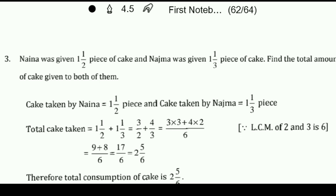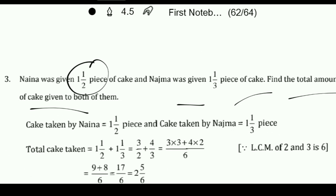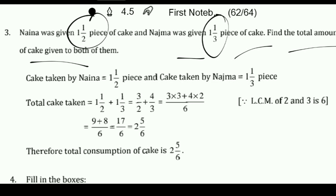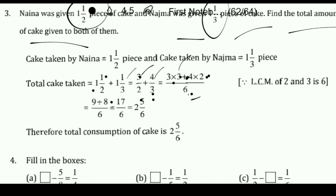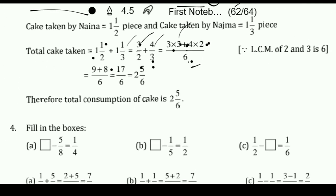Nana was given 1 and 1 by 2 piece of cake and Nizma was given 1 and 1 by 3 piece of cake. Find the total. This is a mixed fraction question, so we first convert to improper fractions: 1 and 1 by 2 becomes 3 by 2, and 1 and 1 by 3 becomes 4 by 3. Then take the LCM of 2 and 3, which is 6. In 2 times table, 6 comes 3 times; in 3 times table, 6 comes 2 times. So 3 × 3 = 9 and 4 × 2 = 8. Then 9 plus 8 is 17 upon 6, which equals 2 and 5 by 6.